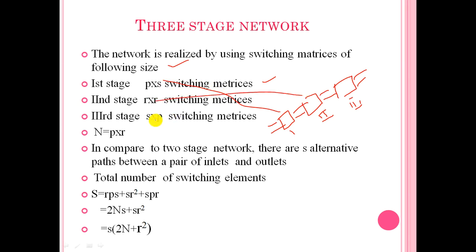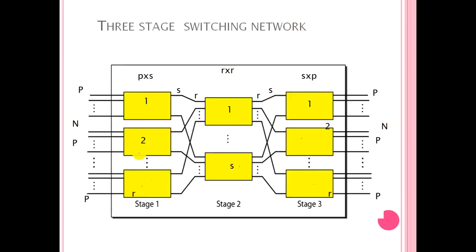In the second stage we use r×r switching matrices, and in the third stage we use s×p switching matrices. We are assuming m is equal to n. So n is equal to p×r. In the first stage we use p×s switching matrices, in the second stage r×r switching matrices, and in the third stage s×p switching matrices.